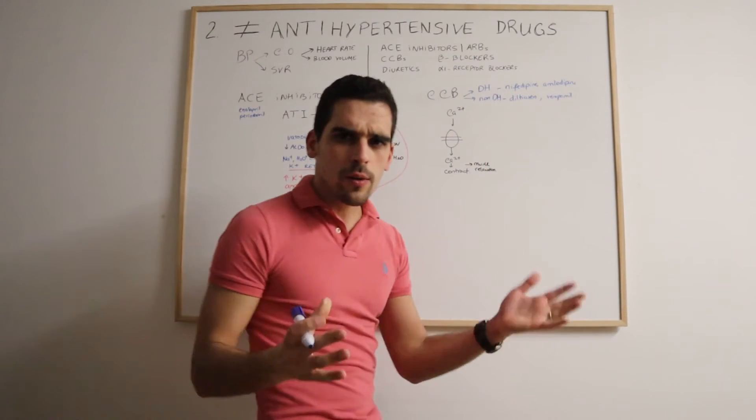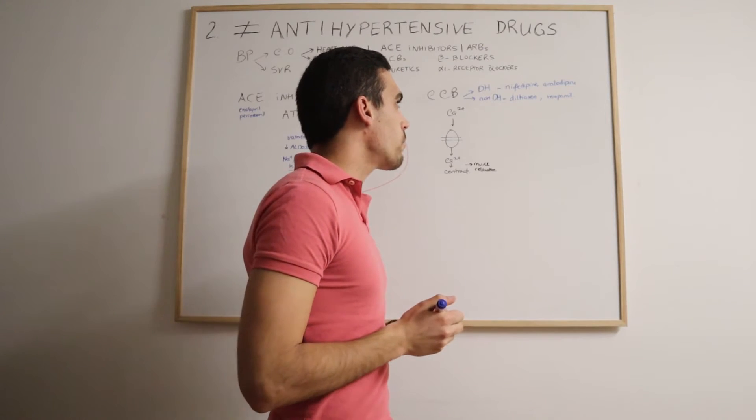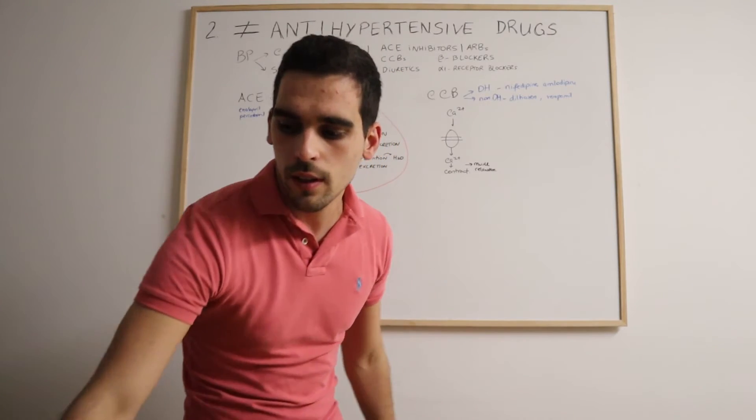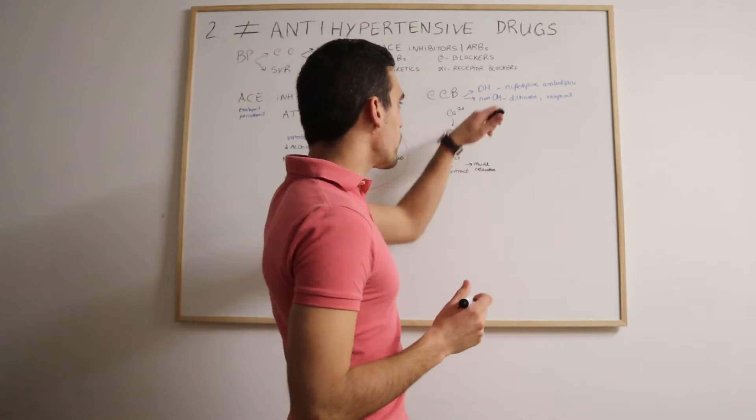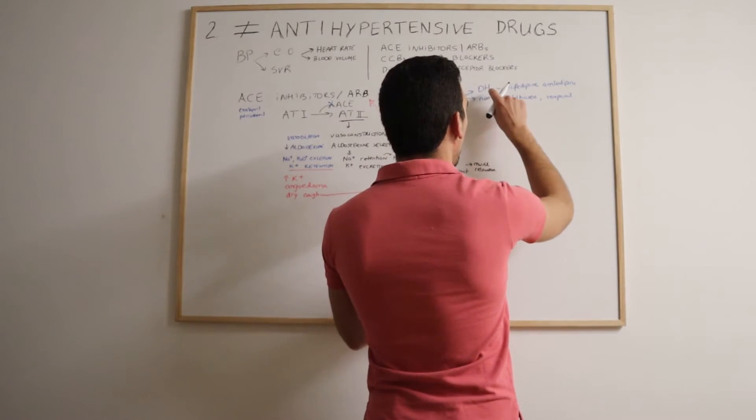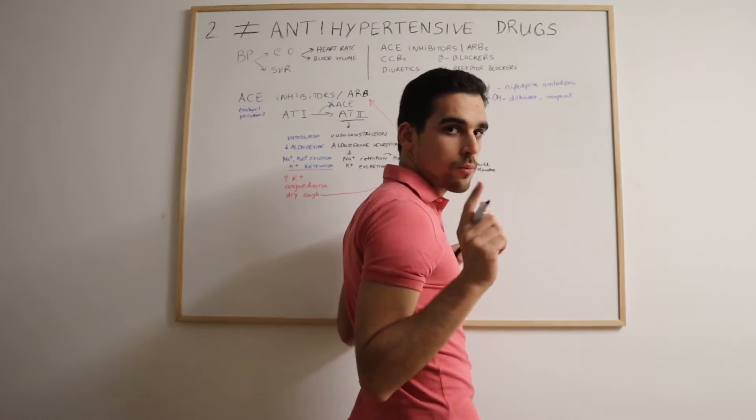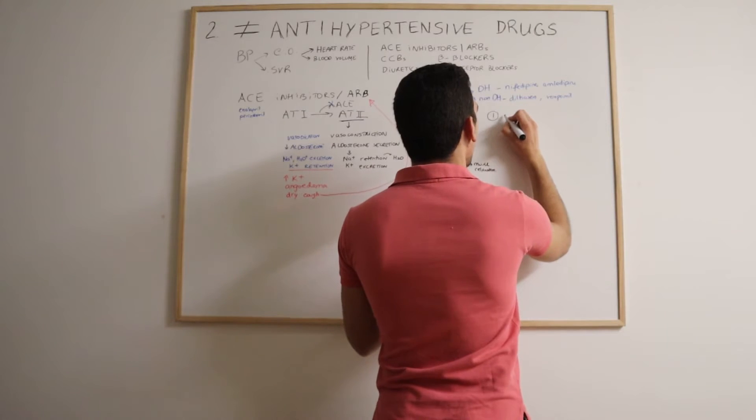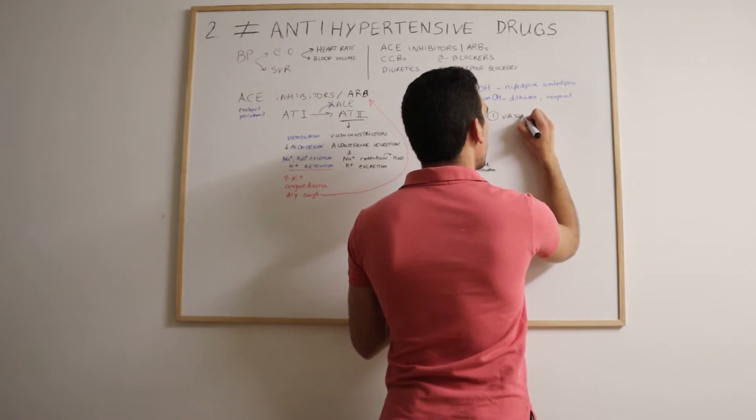It's very important to distinguish between these two classes, because they will have very different effects. For example, the dihydropyridine calcium channel blockers, the nifedipine and amlodipine, they act mainly on the vascular smooth muscles.